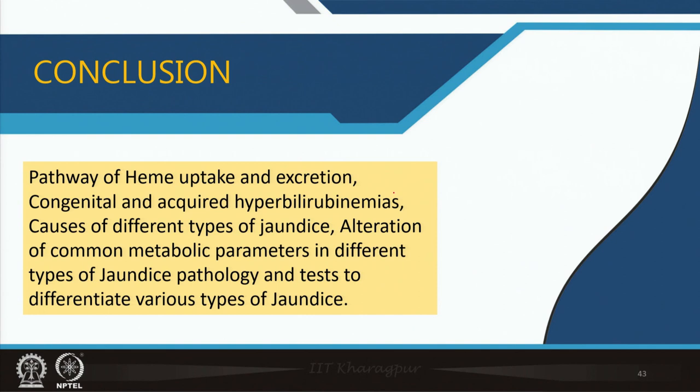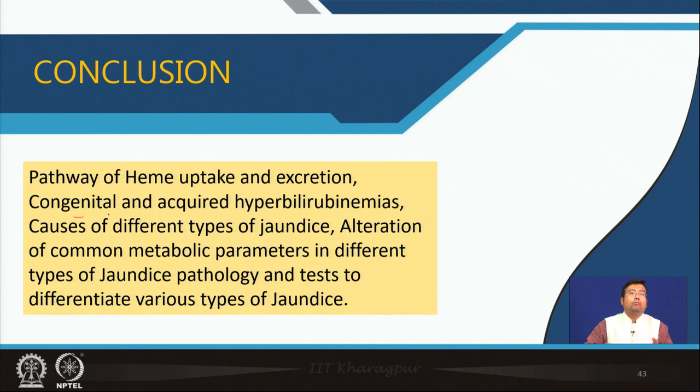To conclude: we have discussed the pathway of uptake of bilirubin and heme across all three classes, the congenital and acquired reasons of hyperbilirubinemia, the causes of jaundice, the alteration of common metabolic parameters in different types of jaundice, and the tests by which we can diagnose and differentiate all three types of jaundice. Thank you for your kind attention.